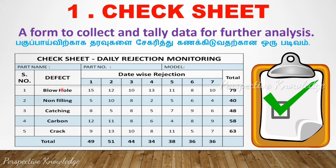In the rejection monitoring process, we track defects such as blow hole, non-filling, catching, carbon, and crack. We can record all this data easily — this is the check sheet.